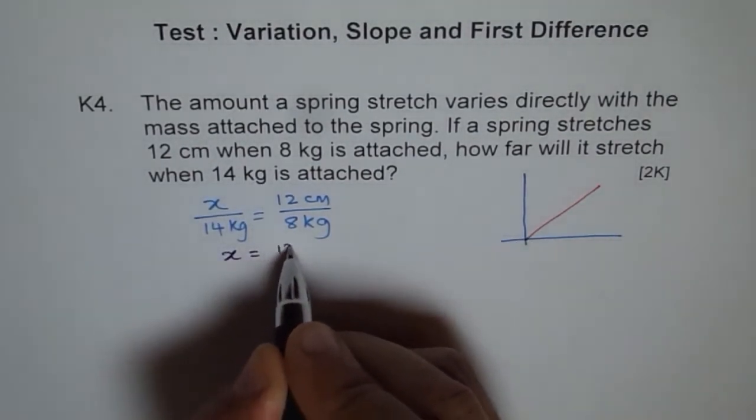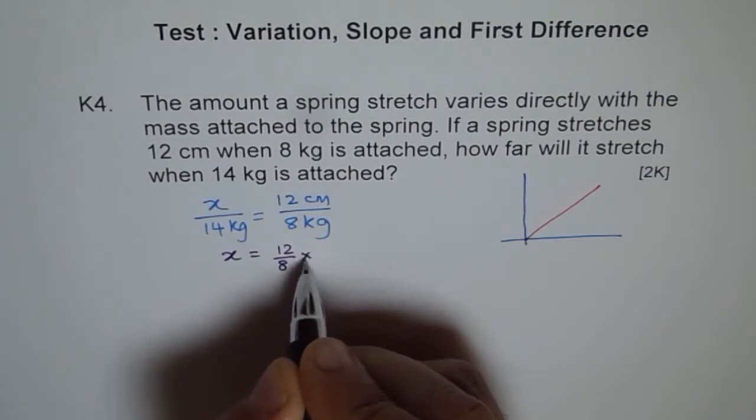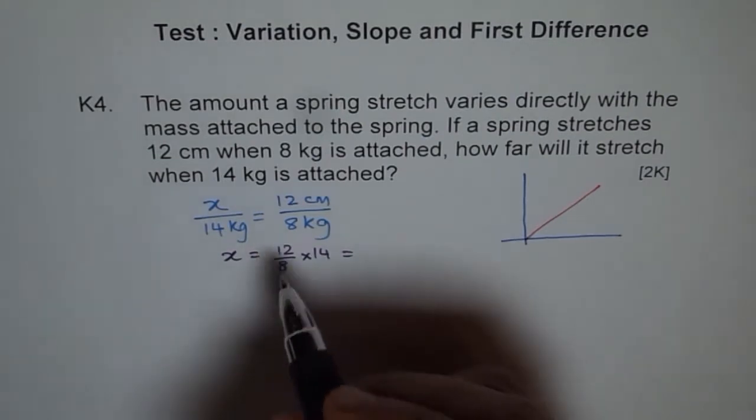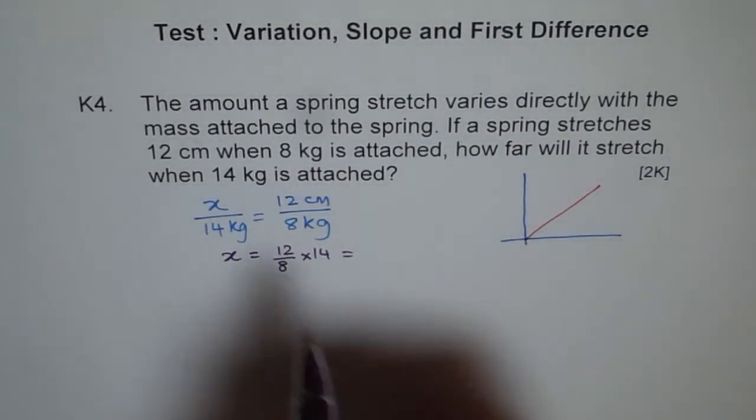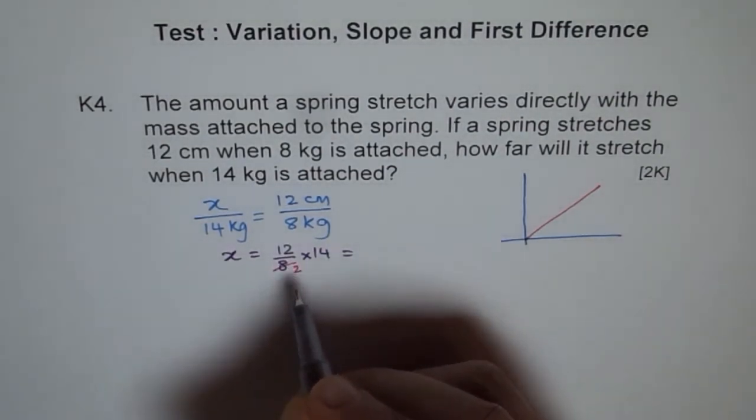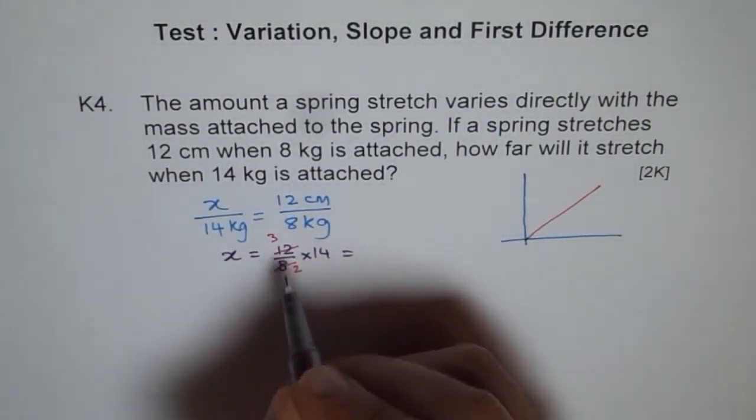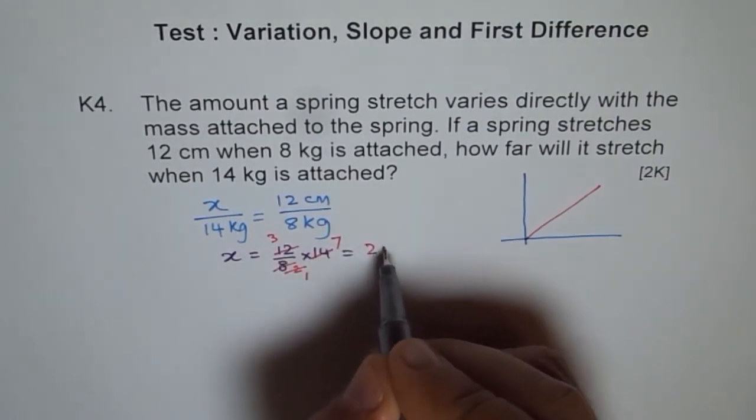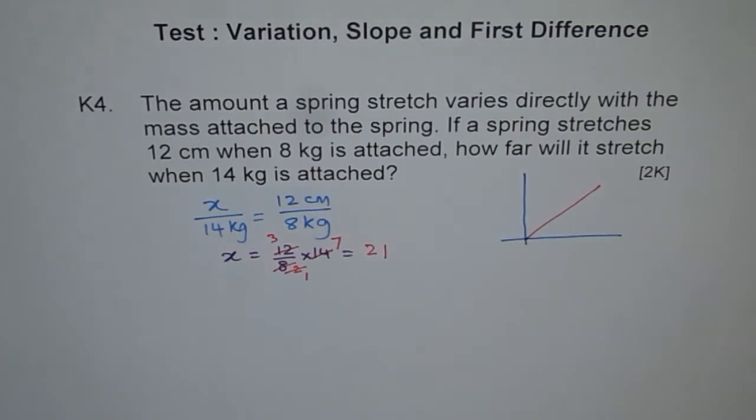So you can simplify this and find your answer. Let me do it here. If I divide by 4, I get 4 times 2 and 4 times 3, and 2 goes 1 time, and 2 times 7... 7 times 3 is 21. So for 14 kg of mass, it will stretch by 21 centimeters.